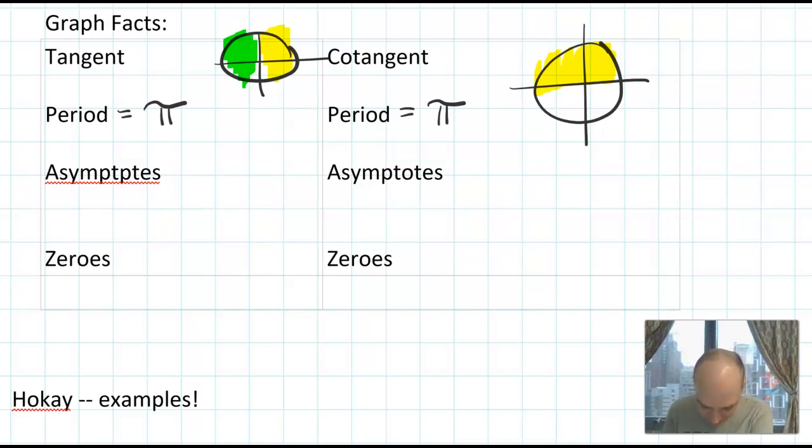For tangent, the asymptotes happen at something like negative π/2, π/2, 3π/2, 5π/2, and all the odd multiples of π/2. Now, I could sit here for hours and make an infinite list of those asymptotes, but that would be pretty boring. So I'm going to do a better thing, which is make an expression that represents all of those asymptotes. The expression looks like π/2 plus πn, where n is an integer.